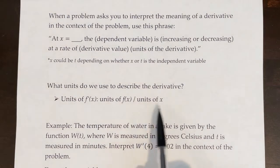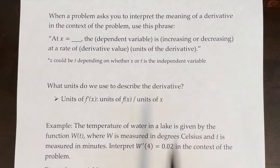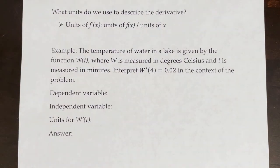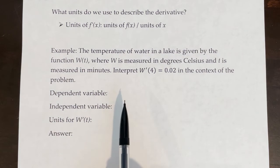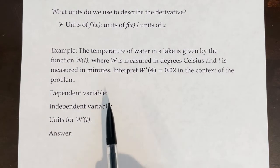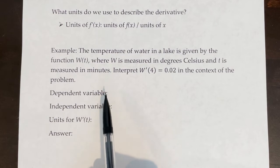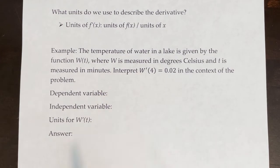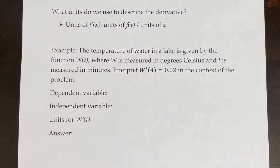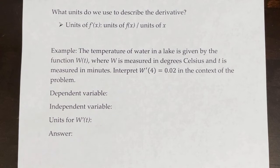Oftentimes, the units of x will be in time — some unit of time. Let's take a look at this example: the temperature of water in a lake is given by the function w of t, where w is measured in degrees Celsius and t is measured in minutes. Interpret w'(4) = 0.02 in the context of the problem.